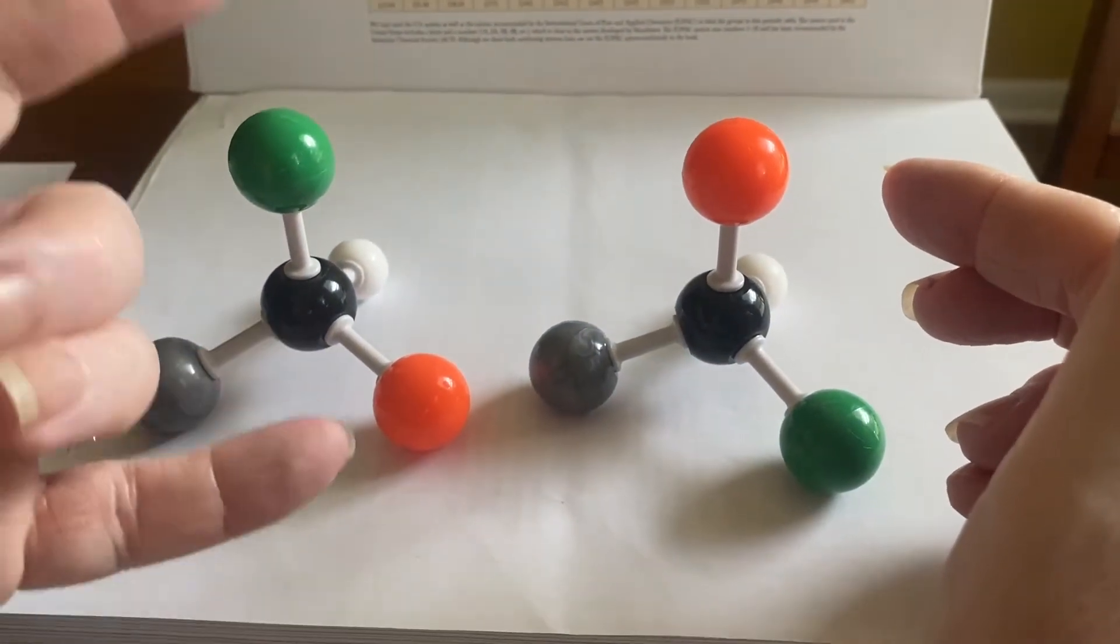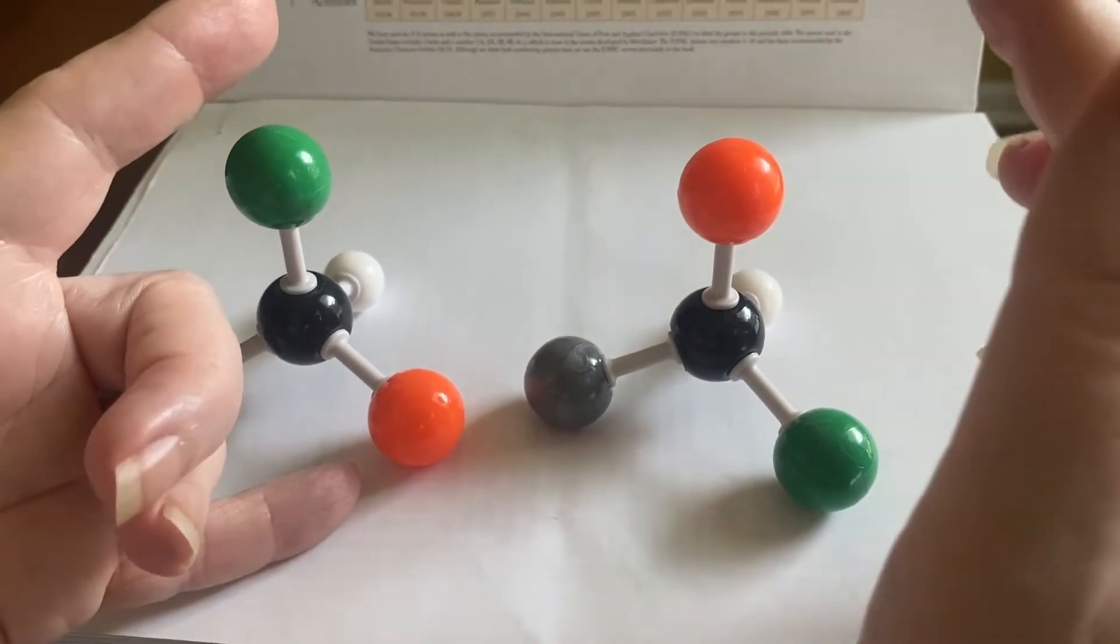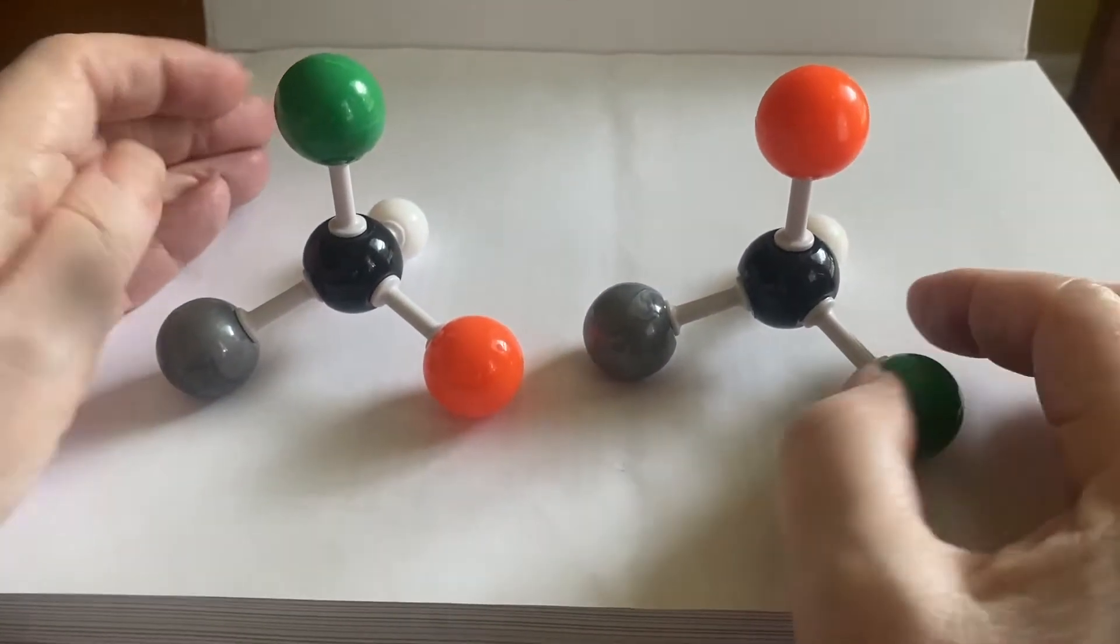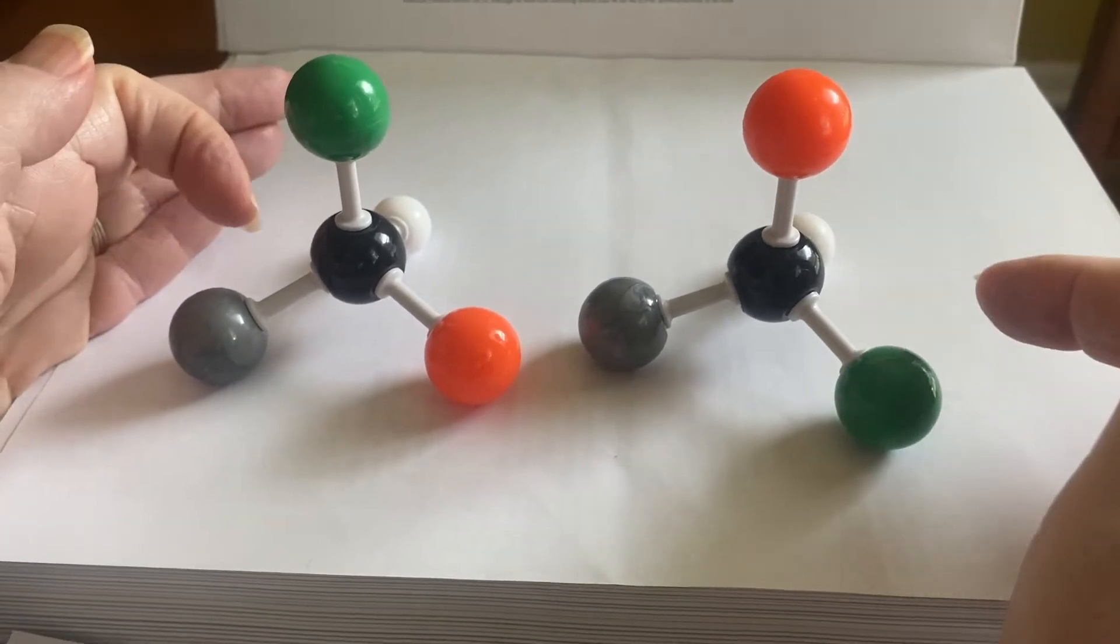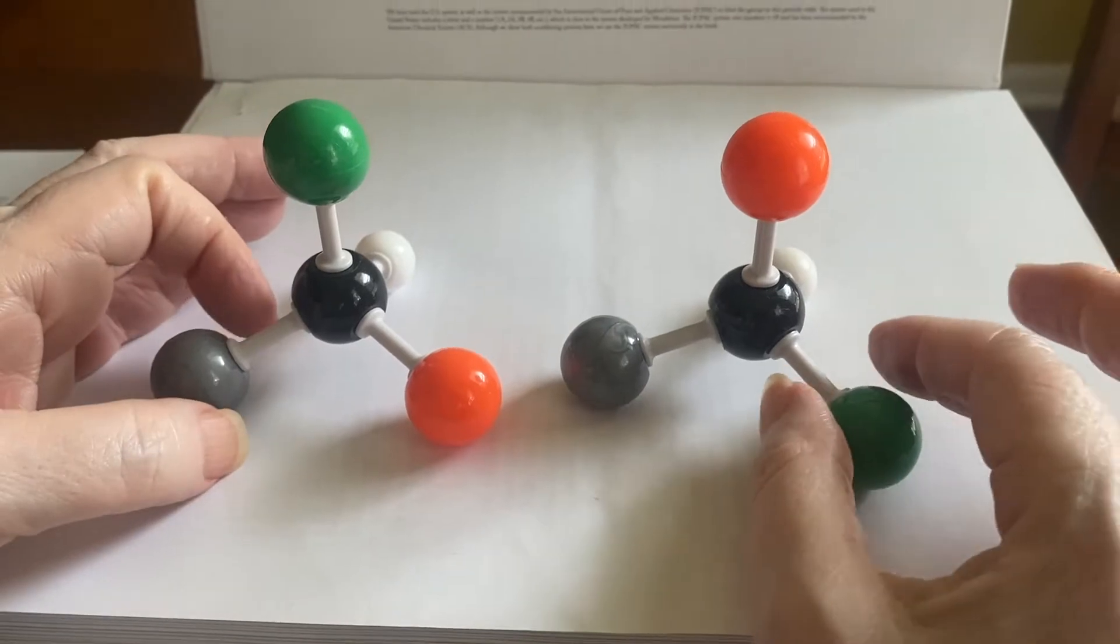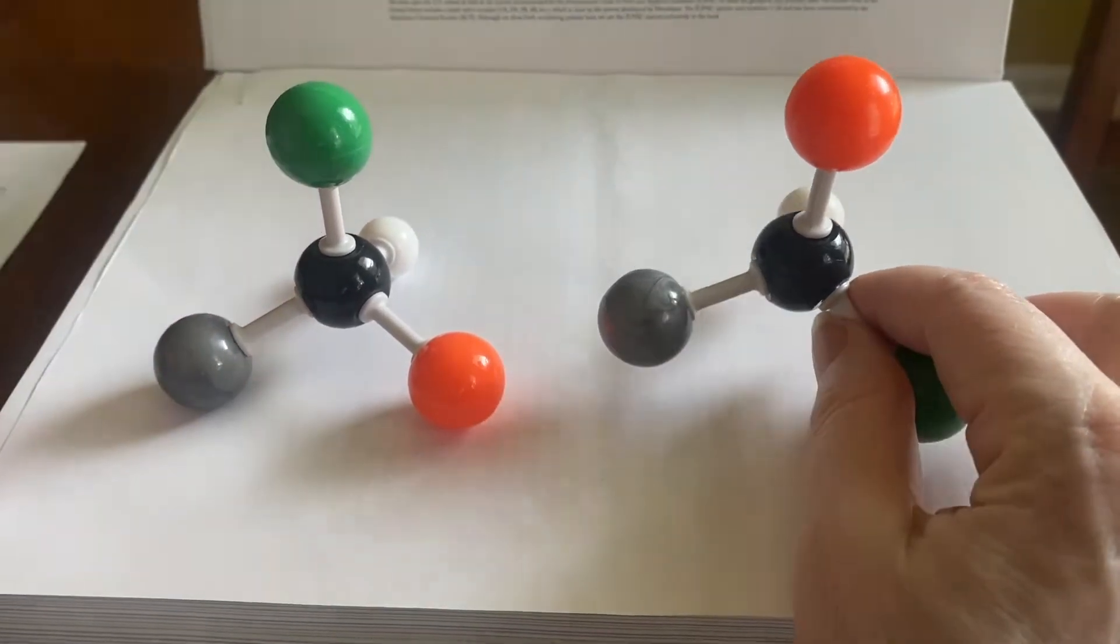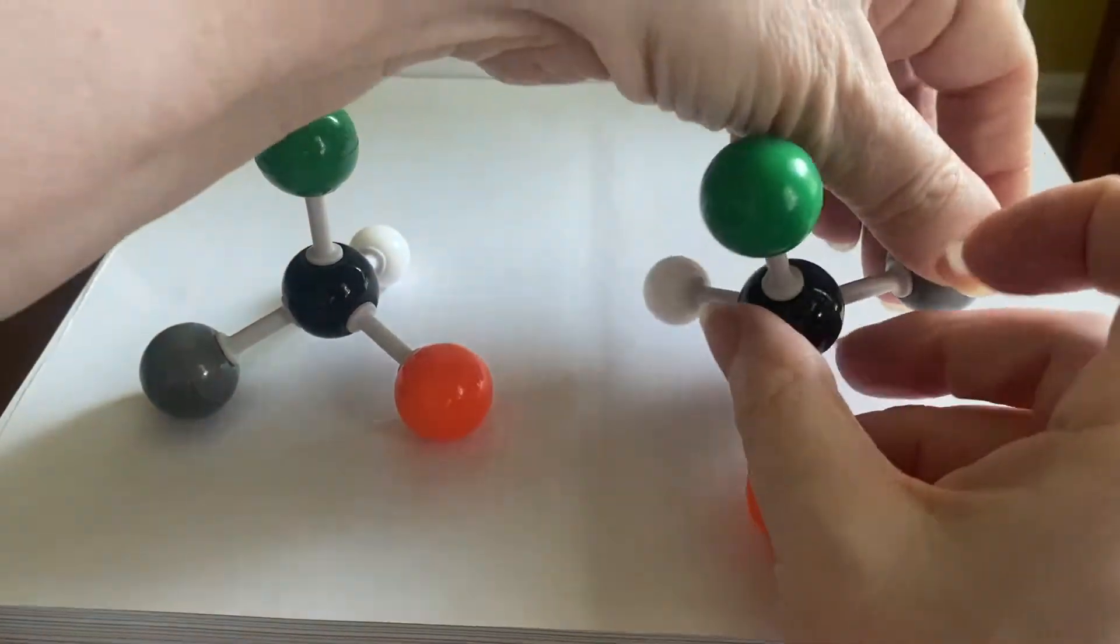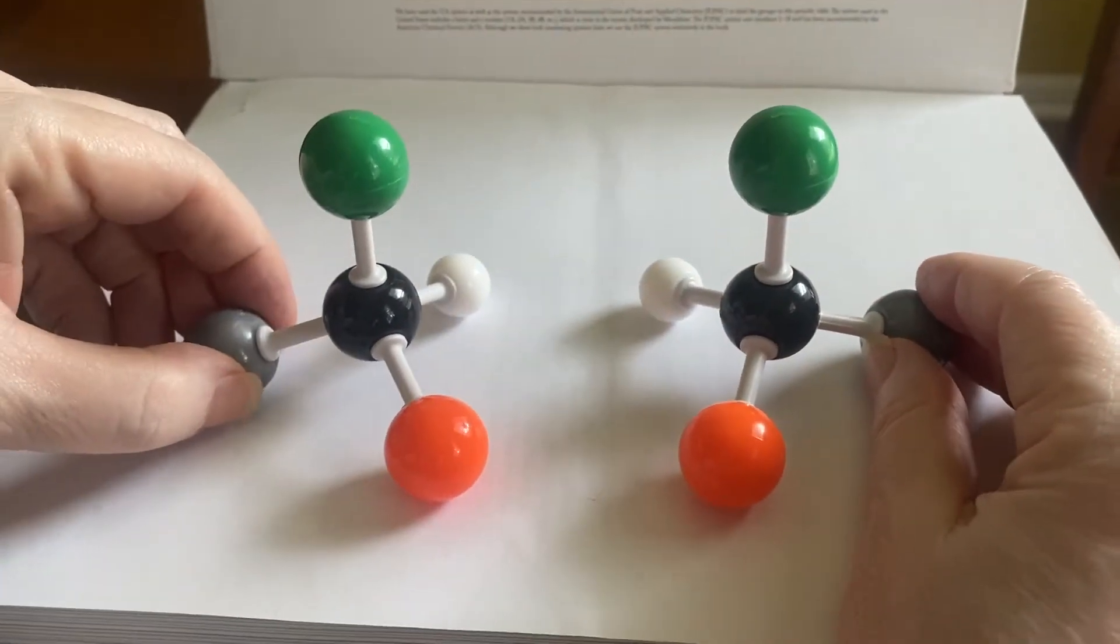But look, one of them, it's green and orange, and the other one, it's orange and green. And no matter how you try to twist this, you are not going to be able to superimpose these on each other. The thing you can do is to twist it around so that you can make it into the mirror.